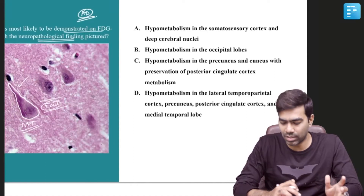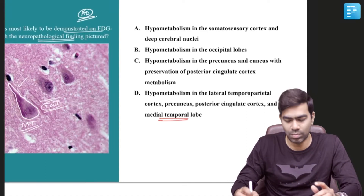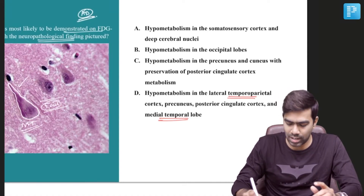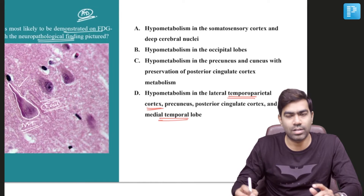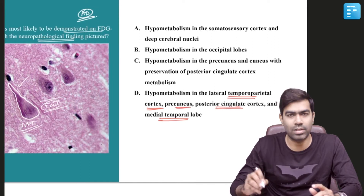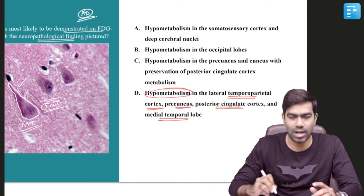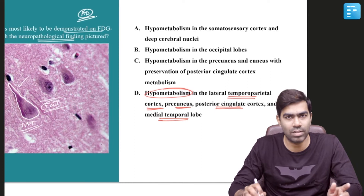Alzheimer's disease is going to involve the medial temporal lobe, lateral temporal parietal cortex, precuneus, and posterior cingulate cortex — and that is where you are going to see hypometabolism on FDG PET.